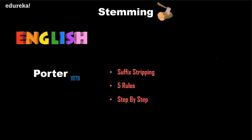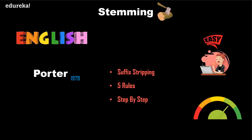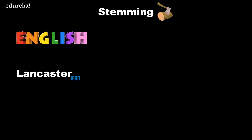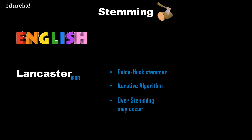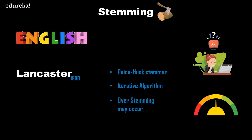Porter stemmer is known for its simplicity and speed. It is commonly useful in information retrieval environments for fast recall and fetching of search queries — for words like 'connections', 'connected', 'connecting', or 'connection', all of which mean 'connect'. The Lancaster stemmer is an iterative algorithm with rules saved externally. It is simple but involves heavy stemming due to iterations, and overstemming may occur. Overstemming causes the stems to be non-linguistic or to have no meaning at all.